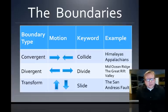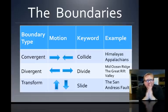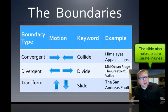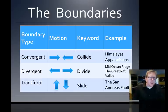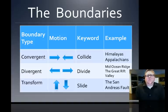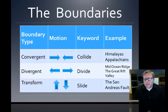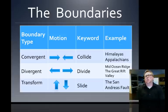The other boundary type is transform, where plates slide past each other. You're not getting new ground, you're not taking away ground, you're not getting new mountains — it really just looks like a big crack in the ground, a giant line where roads are ripped in two. Our example was the San Andreas Fault.